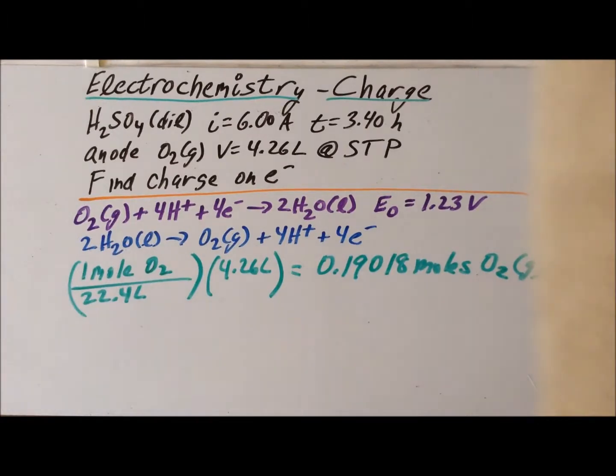We notice from the half cell reaction that for every one molecule of O2 gas that is generated, must have involved the transfer of four electrons. Since we know how many moles of O2 we have, and we know how many molecules are in a mole, we can actually figure out exactly how many electrons must have been transferred when we generated our 4.26 liters of O2 gas.